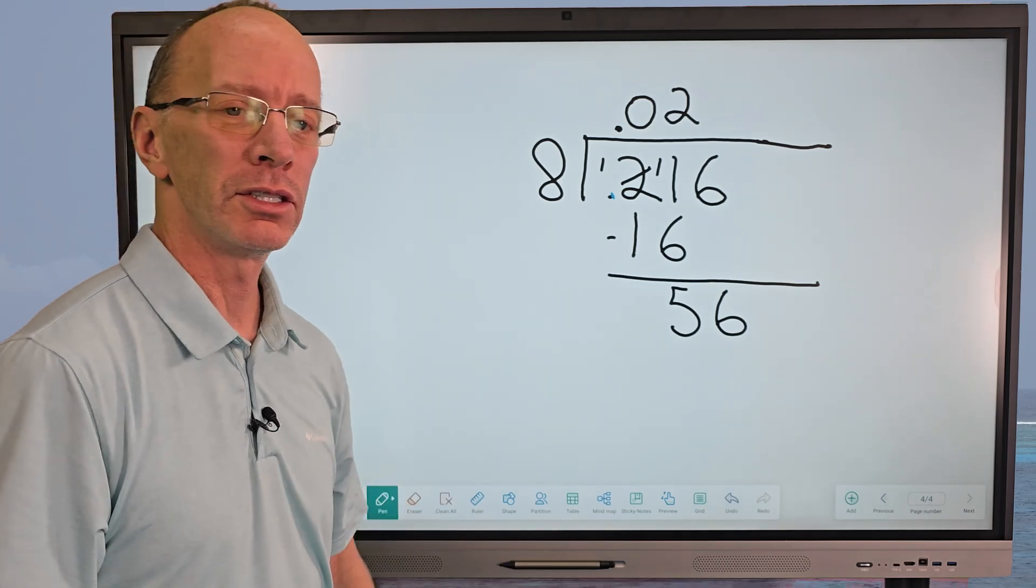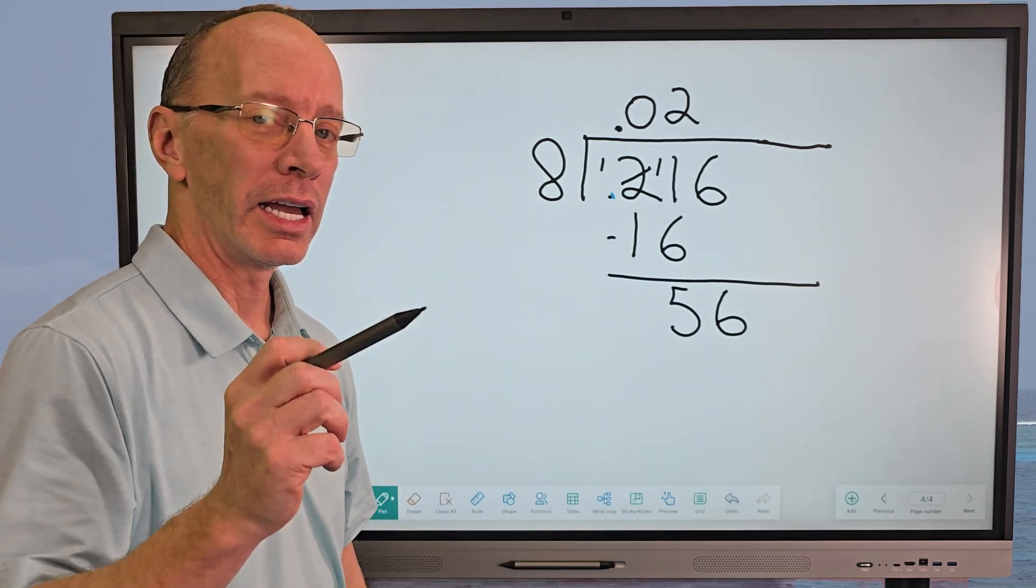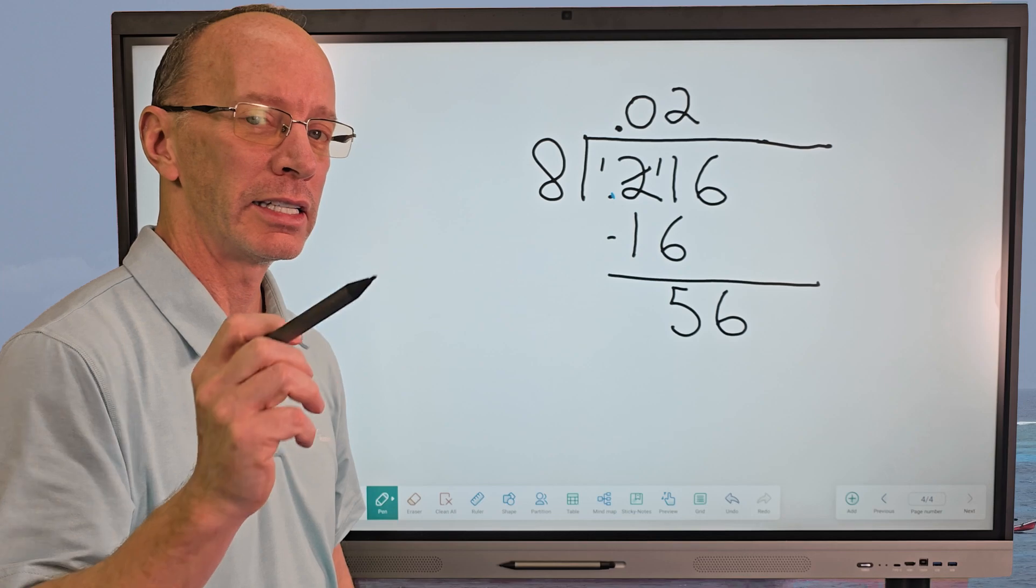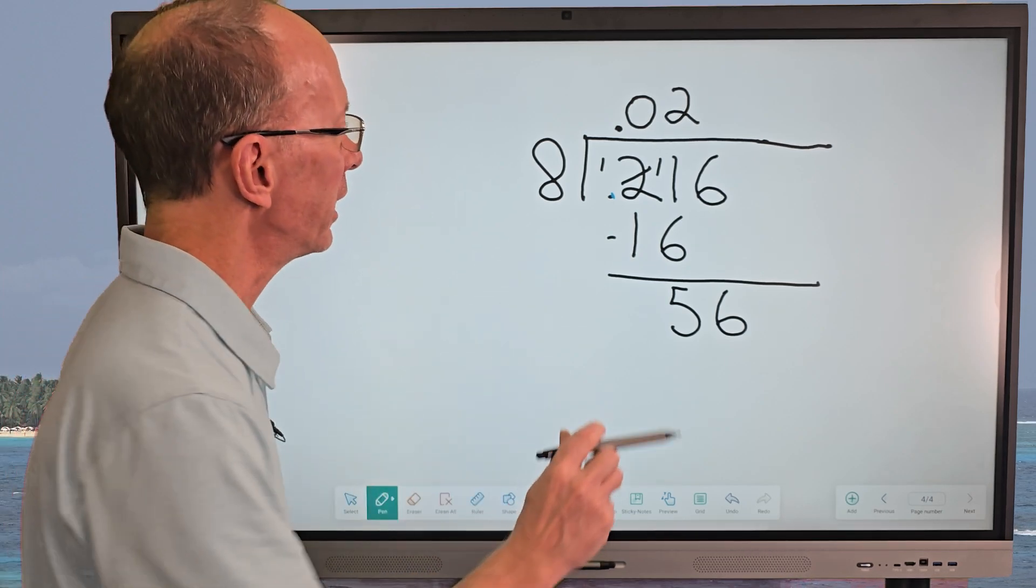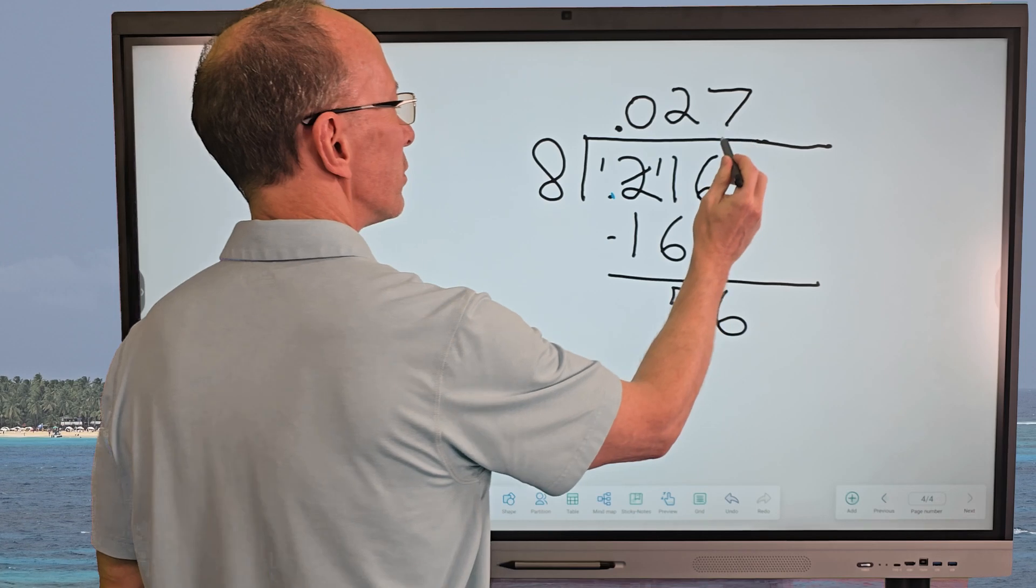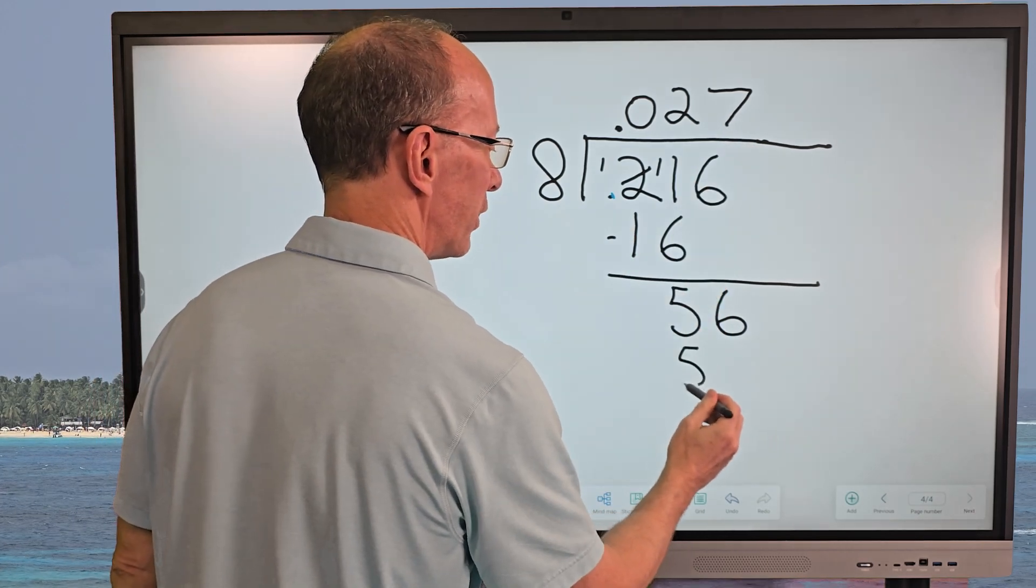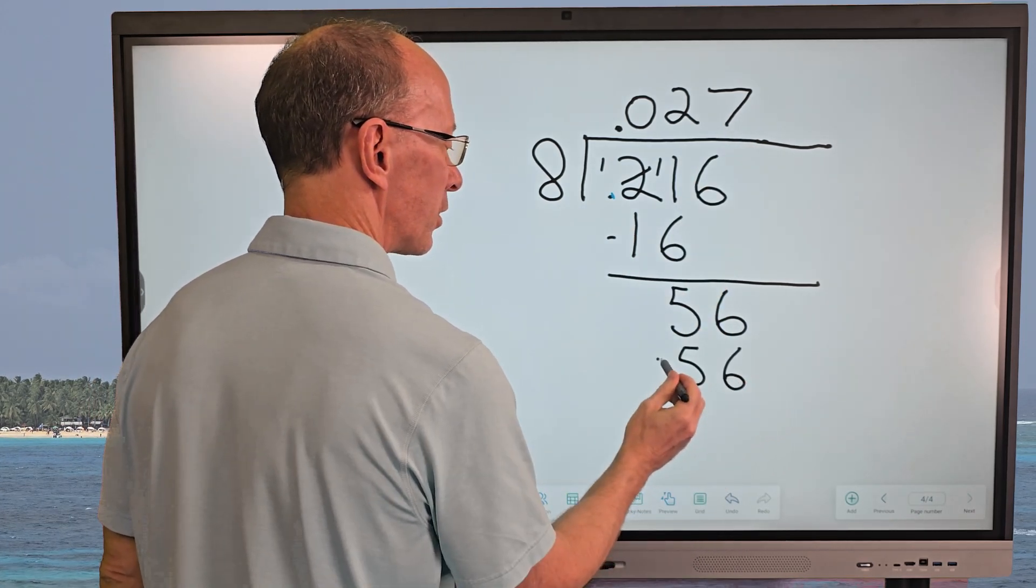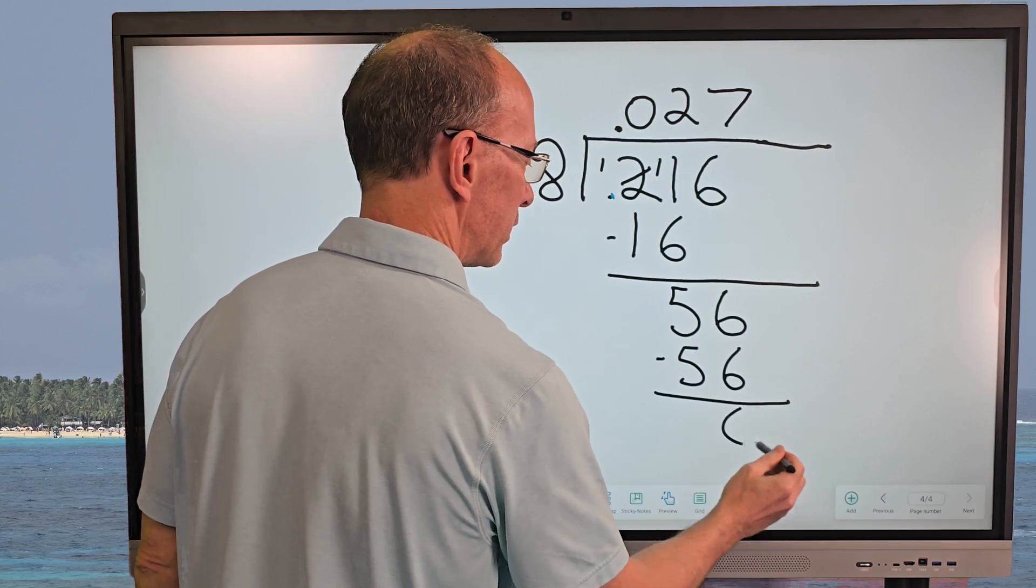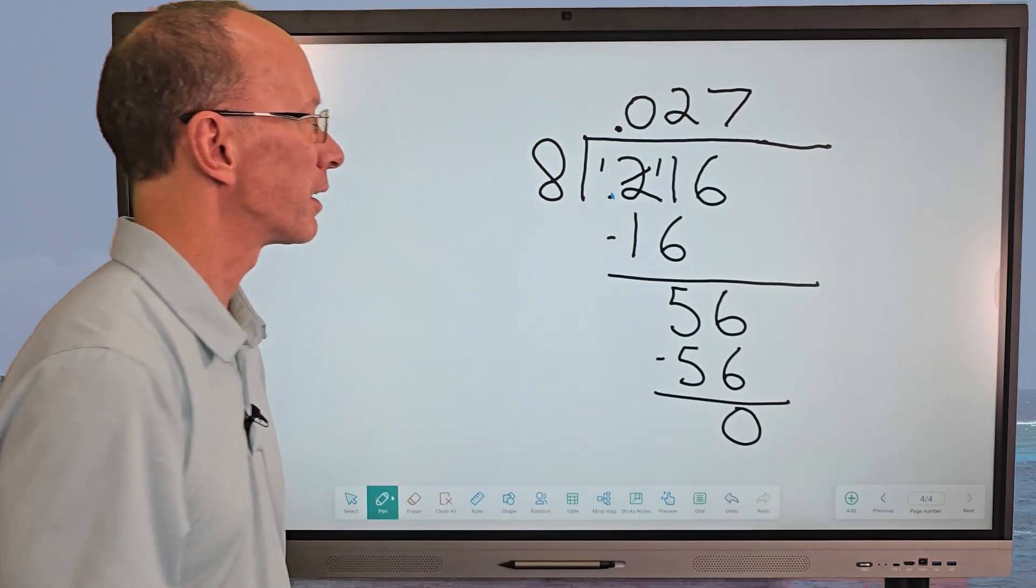And now we start the whole process over. How many times does eight go into 56? Eight times six is 48. Eight times seven, 56. Yeah. I'm going to go ahead and put seven right here. So seven times eight is 56. I'm going to go ahead and subtract. And this is a zero. There you go.